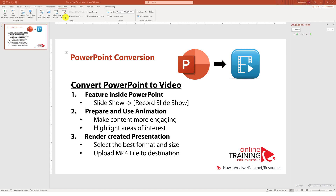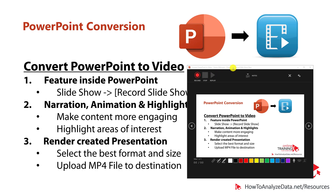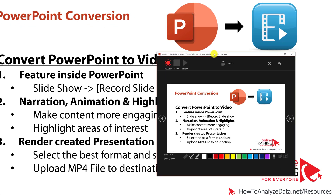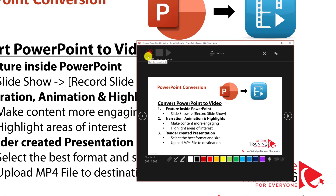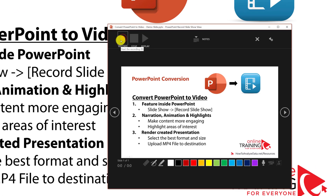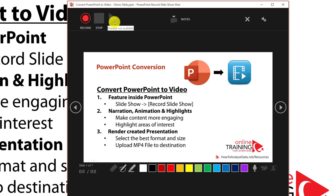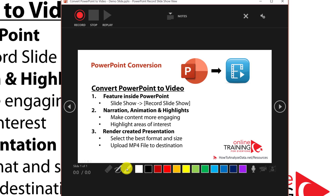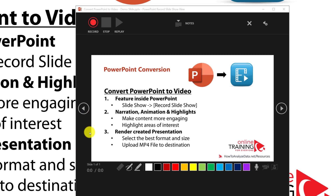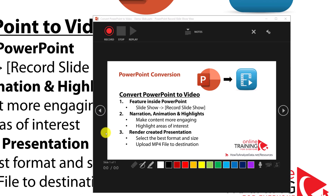To start the recording, you click the Record Slideshow button, and you typically have multiple windows that enable you to control the presentation. In the control window you can record, stop, and replay the presentation. You can also add highlights on the slide to make it more dynamic, and you control all the aspects and settings for the slideshow recording.